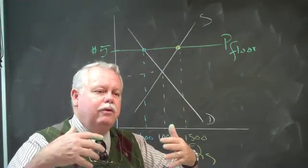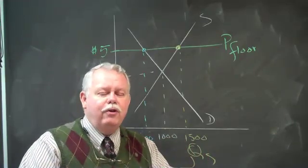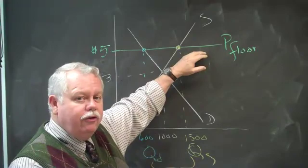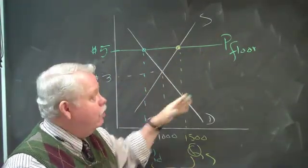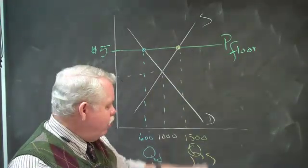So once again, when authority units stepped in, government, and they start setting prices that are inconsistent with the market, we get distortions. When you have a price floor above equilibrium, you wind up with a surplus.